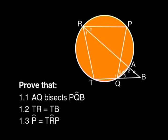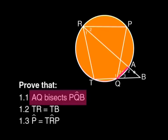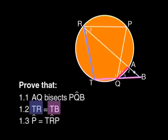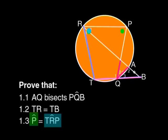You are required to prove three things: that AQ bisects angle PQB; that TR equals TB; and that angle P equals angle TRP.